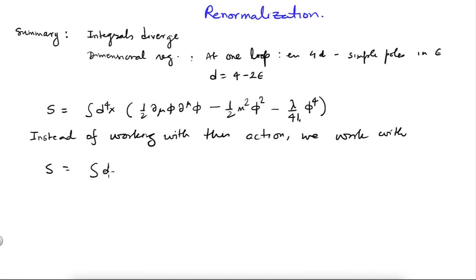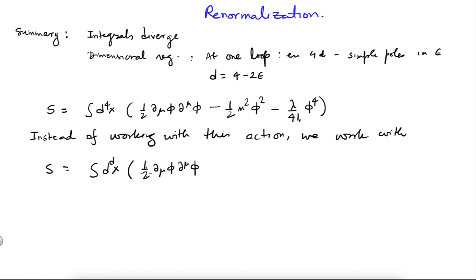I will work instead with the integral d^d x, in d number of spacetime dimensions. The kinetic term half del-mu phi del-mu phi does not change — it simply has more terms if d is an integer: d0-phi d0-phi, d1-phi d1-phi, and so forth up to d(d-1)-phi. But I will let d take even fractional values without worrying too much about what that means, since our aim is just to get Feynman rules which are valid and give integrals already continued to d dimensions.